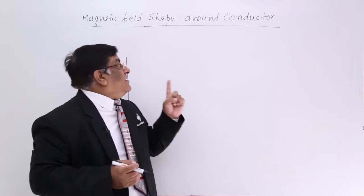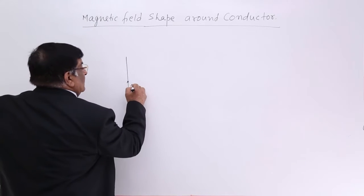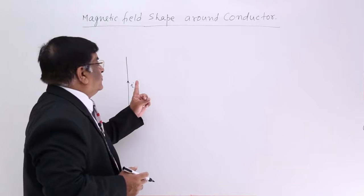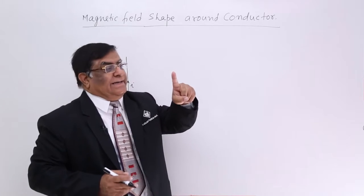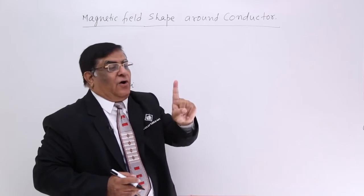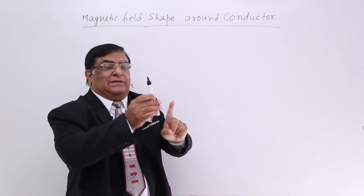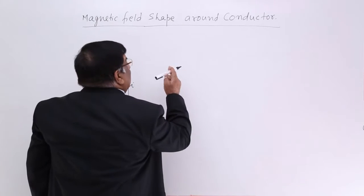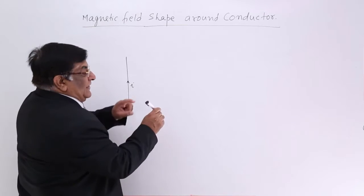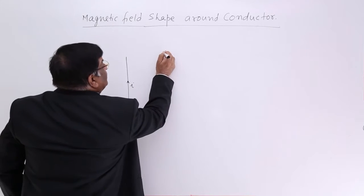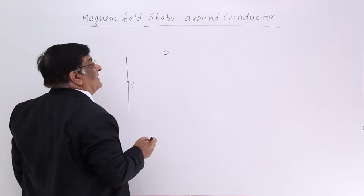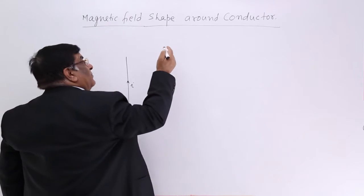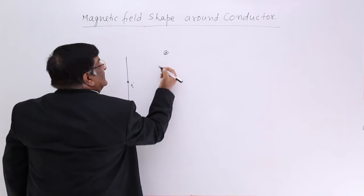This is current I flowing in this direction. I want to show you this conductor and turn it like this — or I can turn it like this. If I turn it like this, then I will see the cross section of this conductor. And how is the current going? Current is going inside the board. I will mark it like this.